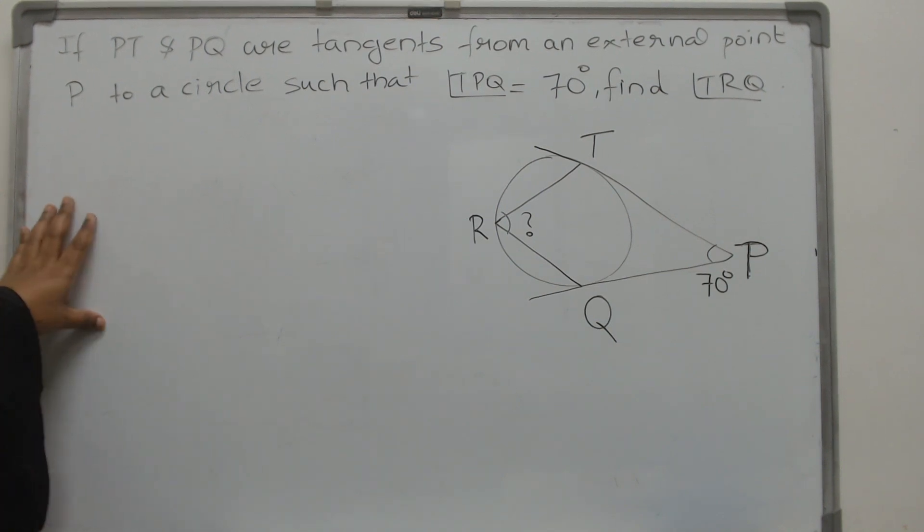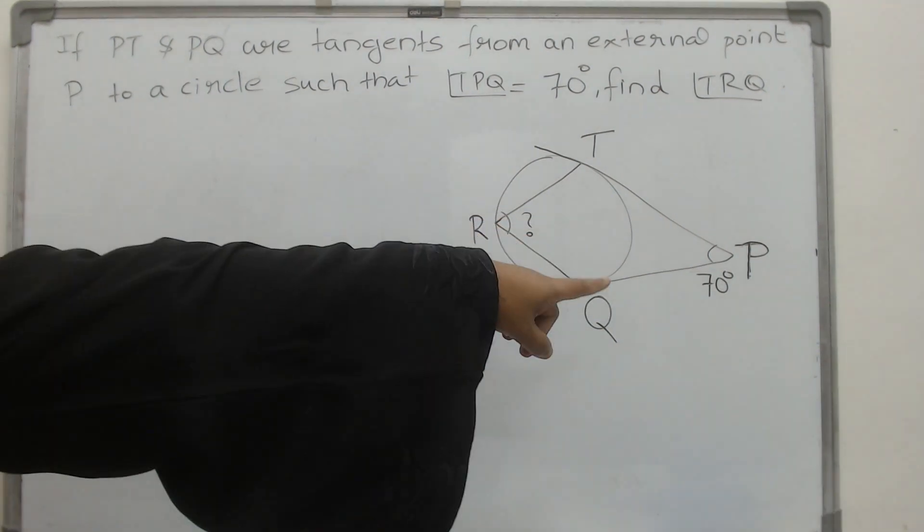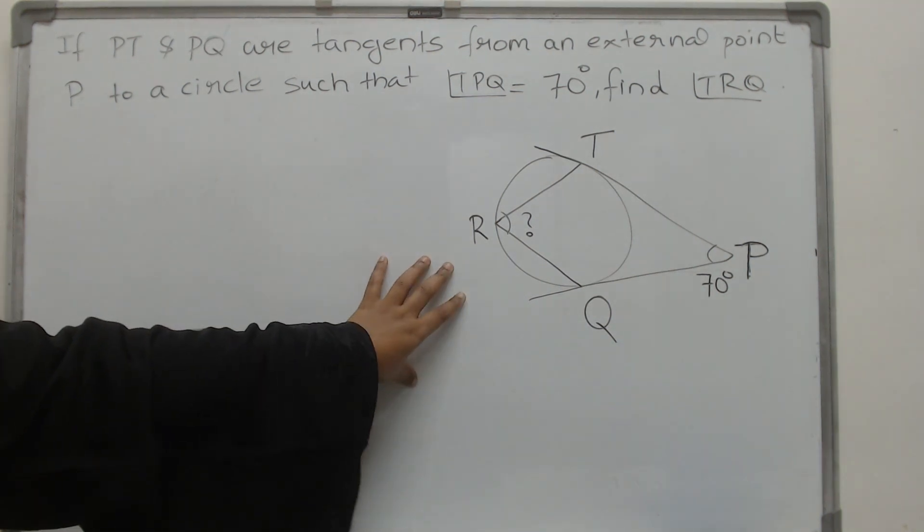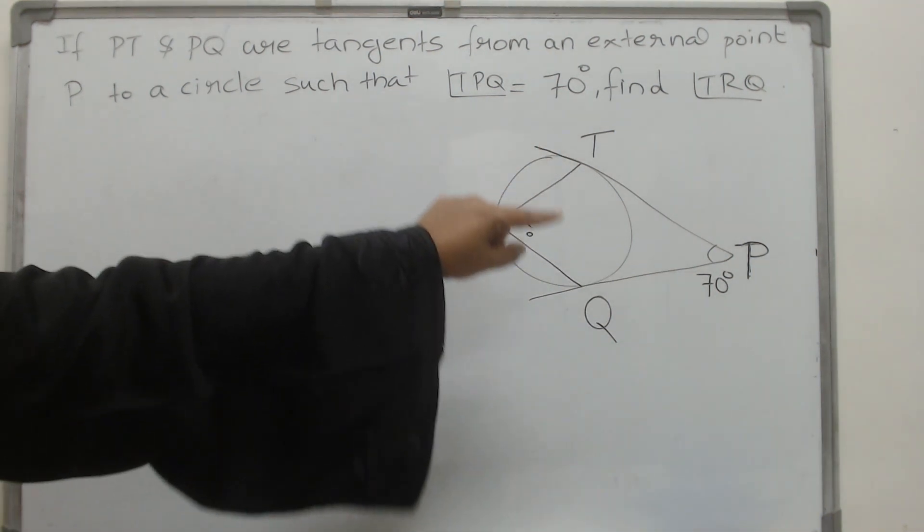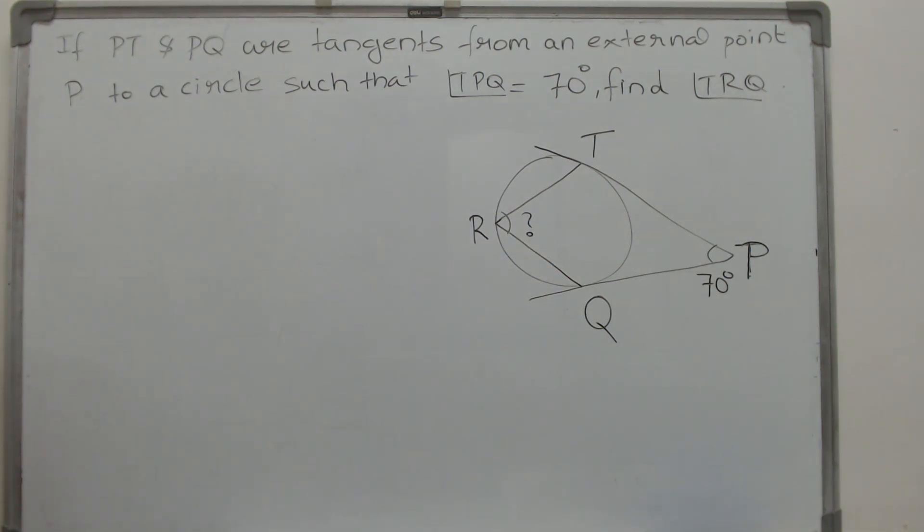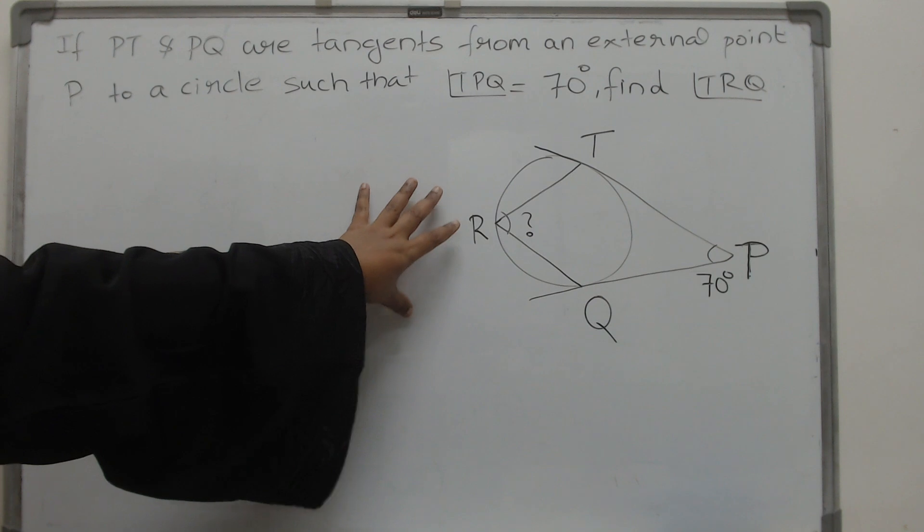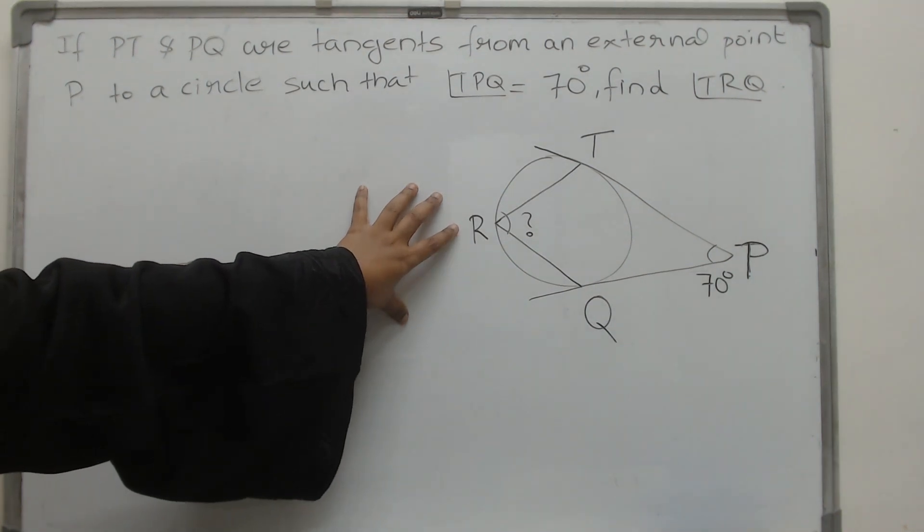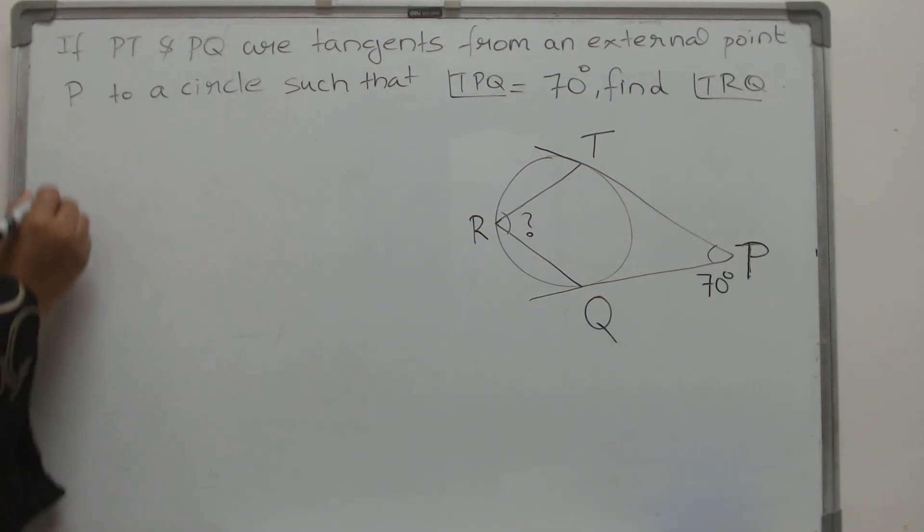This is a question based on circles. From an external point P, there are two tangents drawn PT and PQ and you are given the measure of angle P, it is 70 degrees. Now you have to find out what R is, what is the value of R.